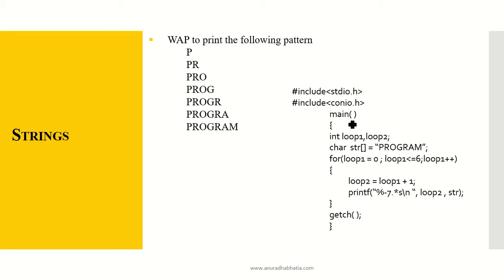So hash include stdio.h, hash include conio.h. Main int loop1 loop2. These are two variables. Character string, whatever is the size of the string will be taken as the size of str.